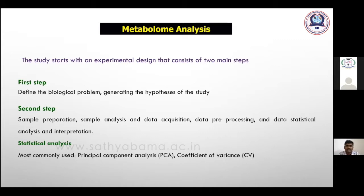GC-MS is used for analyzing only volatile compounds. Derivatization is important because it converts non-volatile compounds into volatile ones. Once this is done, we go for the analysis process and develop a suitable method for running the metabolic study. Then there are steps like data preprocessing, data acquisition, and data statistical analysis, and finally interpretations.